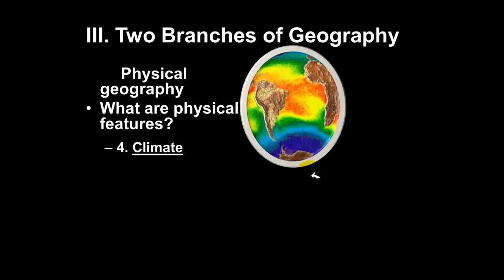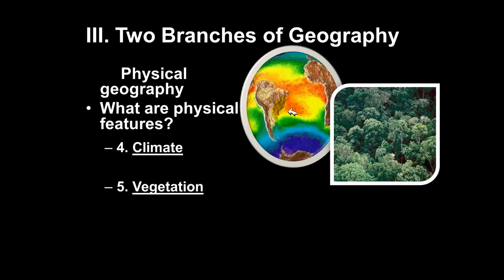Another physical feature is climate. This graphic shows different climate zones. Climate is the normal weather patterns of an area. For Louisiana, our normal weather patterns are very hot, humid summers with a lot of rain and very short winters. In Antarctica, the climate would be very long, very cold, dry winters and short summers. Over the long term, the climate of a region remains the same.